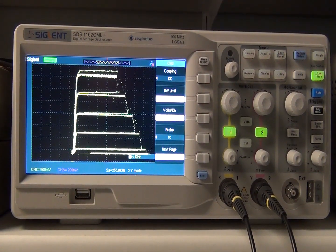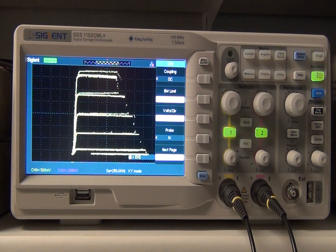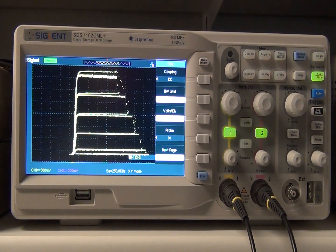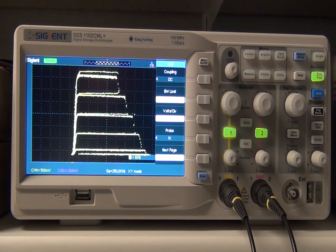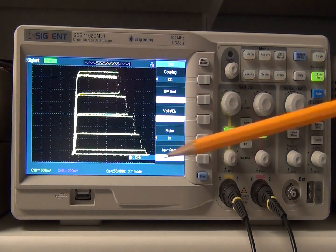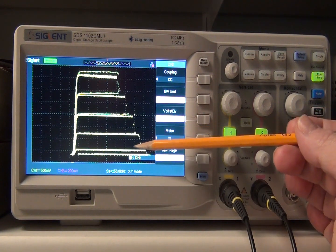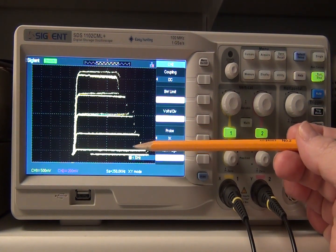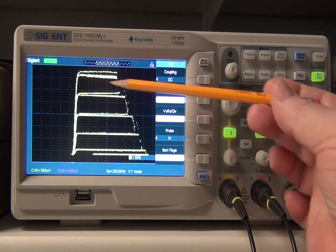Alright, so this is the transistor curve tracer on the Siglent. You can see we still have five steps here of the base current. So basically there's one down here. One, two, three, four, five.